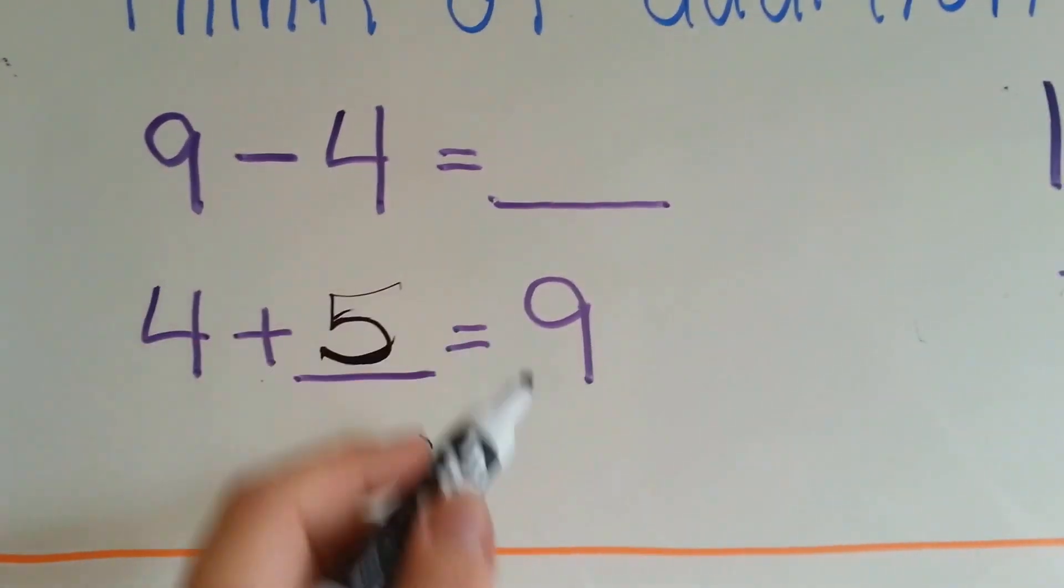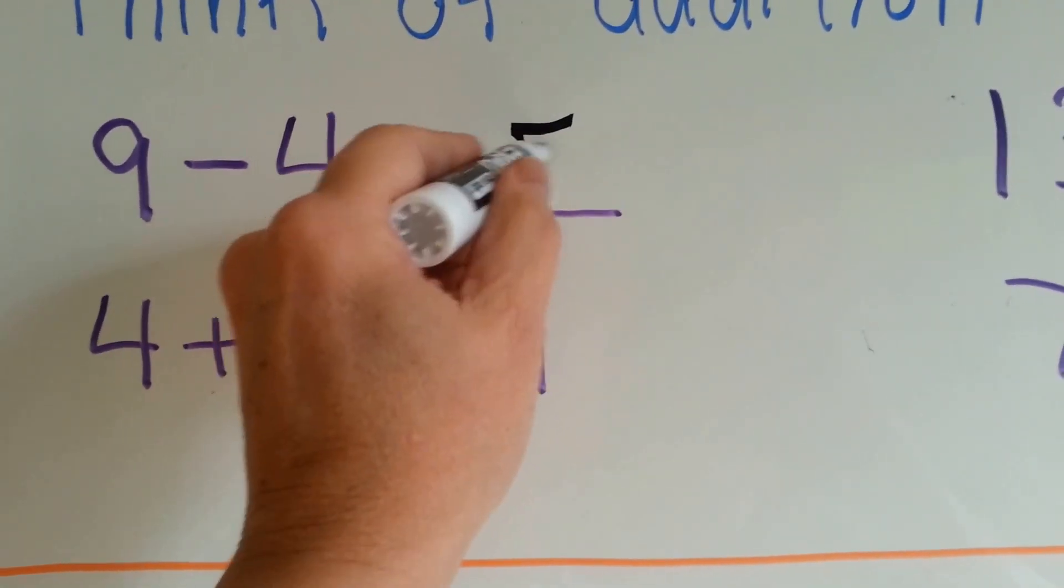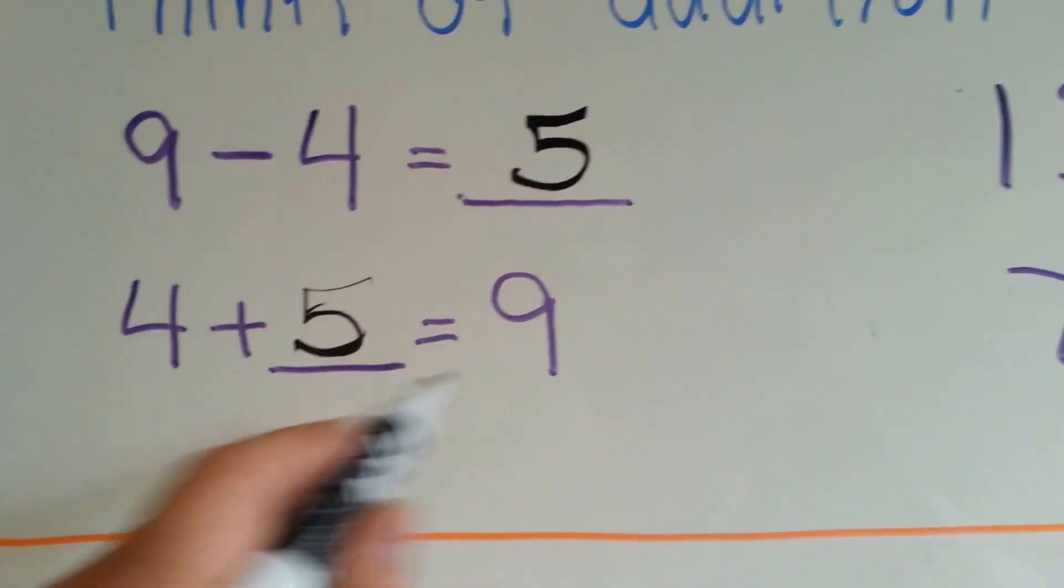So, 9 take away 4 is 5. This is a fact family.